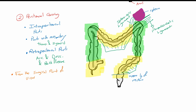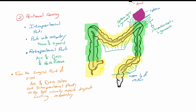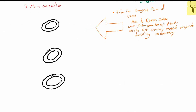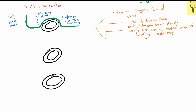Unlike other retroperitoneal structures, for example the pancreas or the kidneys, the retroperitoneal part of the colon is considered from the surgical point of view as an intraperitoneal part, because it is easily mobile and easily accessible from the anterior approach. The ascending and descending colon are usually covered only anteriorly with the peritoneum.